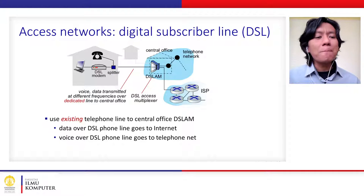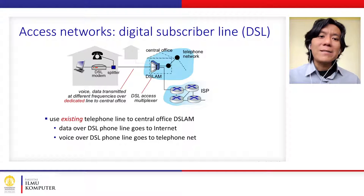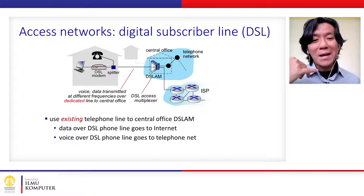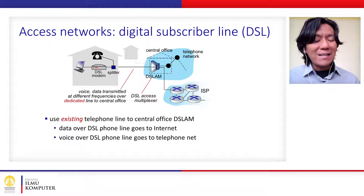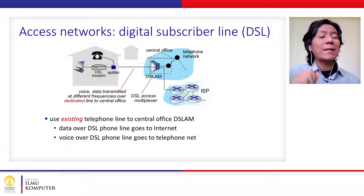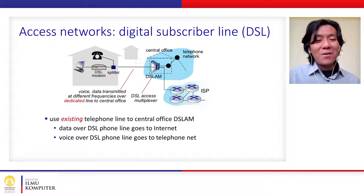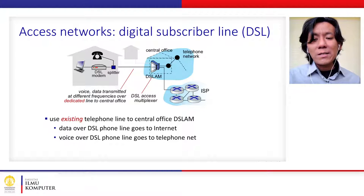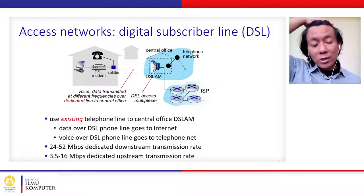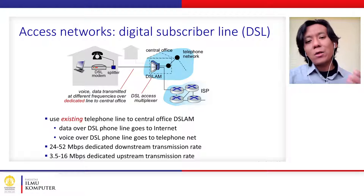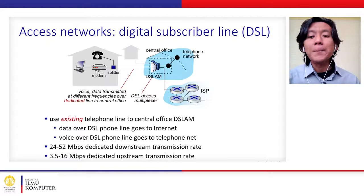The second cable-based access option for residential areas is Digital Subscriber Line (DSL). DSL utilizes existing telephone cables for transmitting internet data. For example, if you want to set up home internet services, you will be required to have a telephone cable so they can set up internet services over it. Because it uses existing telephone infrastructure, they don't have to build a separate infrastructure. However, the transmission rate and bandwidth for DSL over telephone cable is lower than fiber optic.